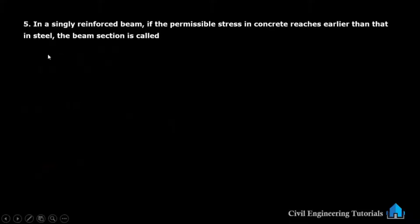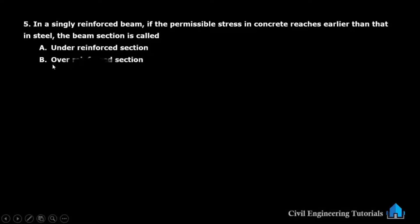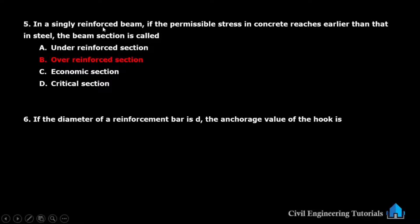In a singly reinforced beam, if the permissible stress in concrete reaches its limit earlier than that in steel, the beam section is called — option A: under-reinforced section, option B: over-reinforced section, option C: economic section, option D: critical section. The answer is option B — the beam section is called an over-reinforced section. You should remember this, as it is frequently asked in interviews.